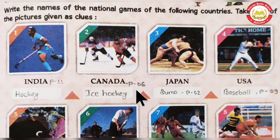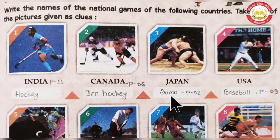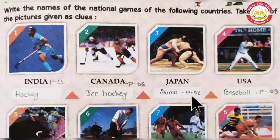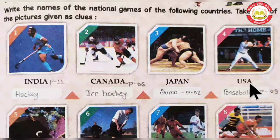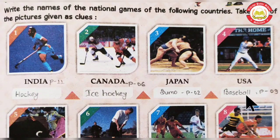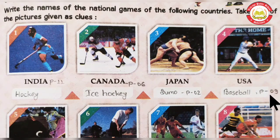The third one is Japan. The national game of Japan is Sumo. There are 2 players in this game. The fourth one is USA. Baseball is the national game of USA and 9 players are participating in each team.